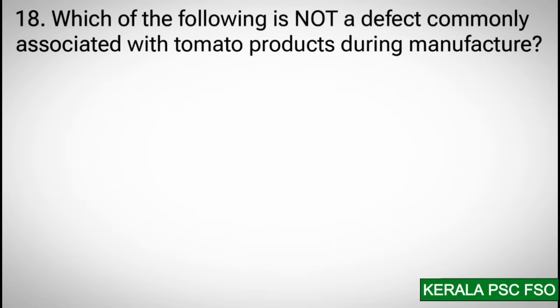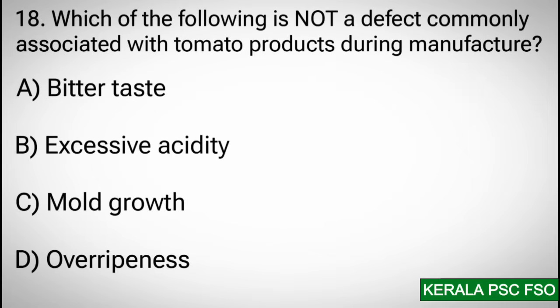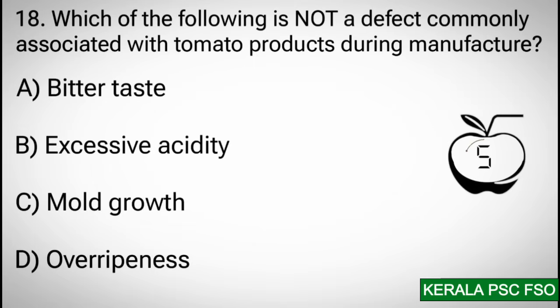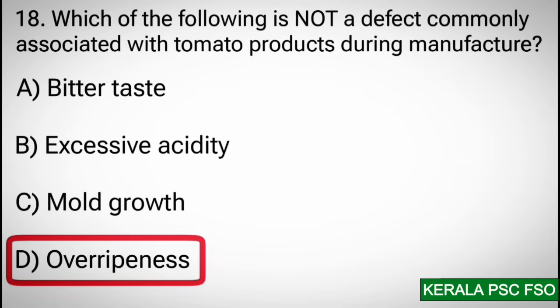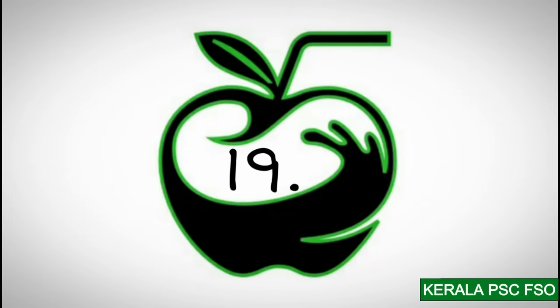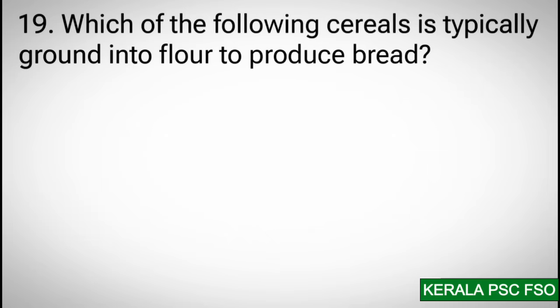Question 18: Which of the following is not a defect commonly associated with tomato products during manufacture? Options: a) bitter taste, b) excessive acidity, c) mold growth, d) overripeness. Correct answer: d) overripeness.